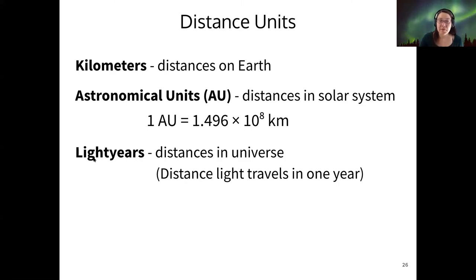And then light year is the most useful distance unit so far in the rest of the universe. And this is defined by the distance that light travels in one year. So light moves at 3 times 10 to the 8 meters per second. And then you multiply that by the seconds in a year. And if you do that, you will find that one light year is 9.461 times 10 to the 12 kilometers.